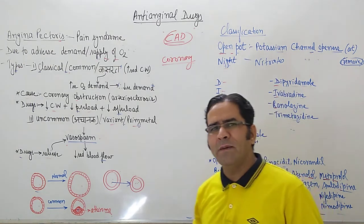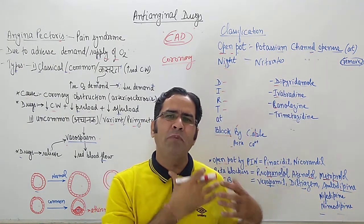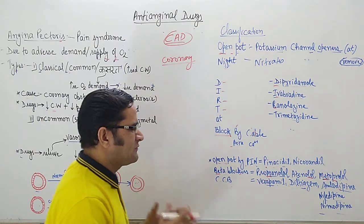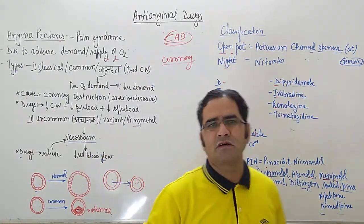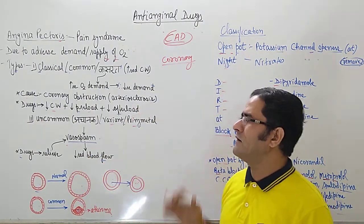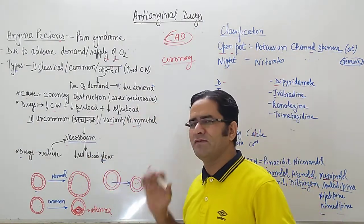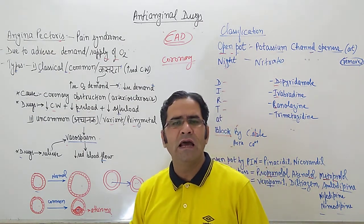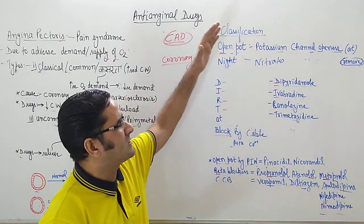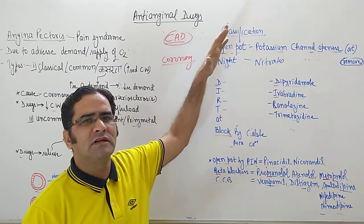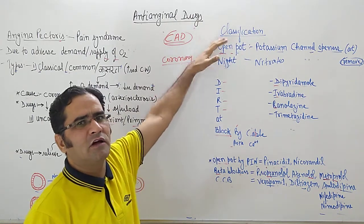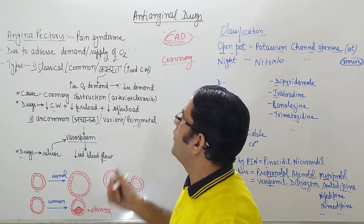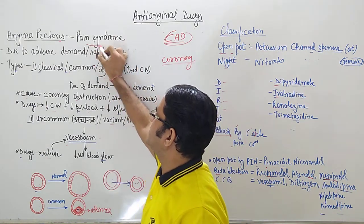In angina, there is a pain in the left part of the body. In this video, we will first see the cause behind angina, the two types of angina, and how the drugs work to treat it. After that, we will see the mnemonic or trick to remember the drugs used for treatment of coronary artery disease.